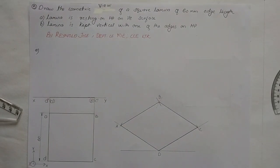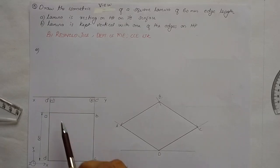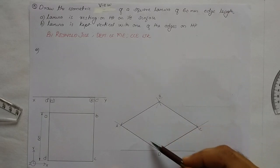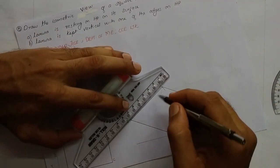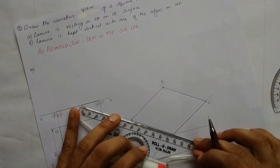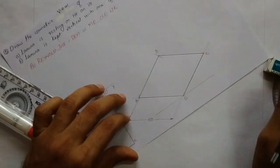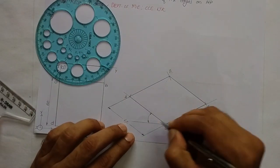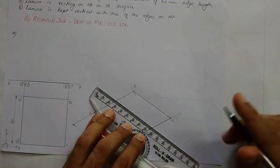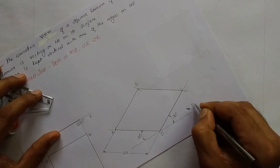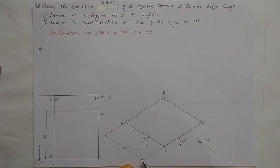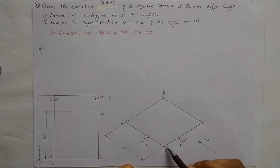Now we do the dimensioning process and indicate the direction of the front view. In this case, the front edge BC-DC is on the right-hand side, so that is the direction in which we observe this lamina to get the front view. When marking arrowheads, first mark a small cutting parallel to the projection line, then draw the larger arrowhead with the cutting almost parallel to this line.